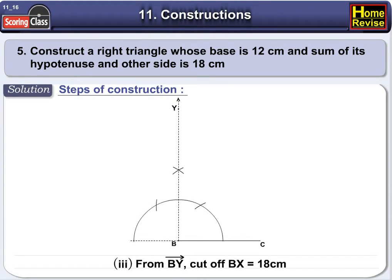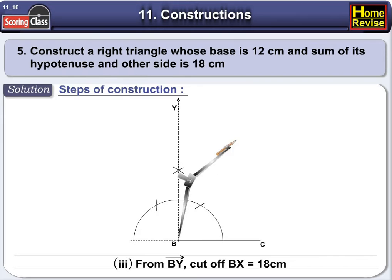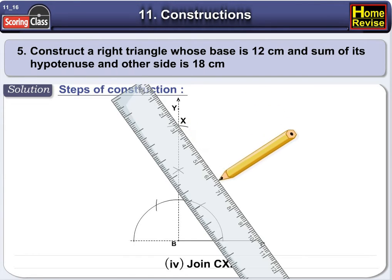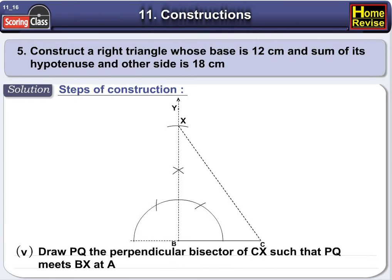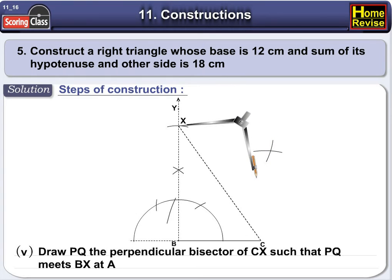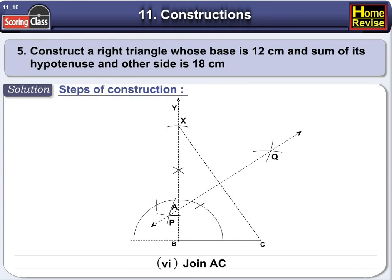From ray BY, cut off BX as 18 centimeters and join CX. Draw PQ, the perpendicular bisector of CX, such that PQ meets BX at point A. Join AC.